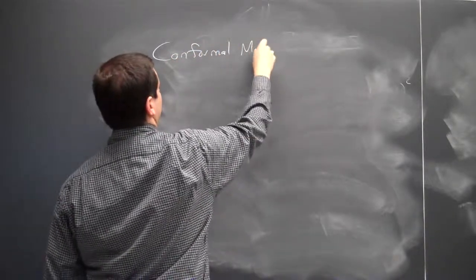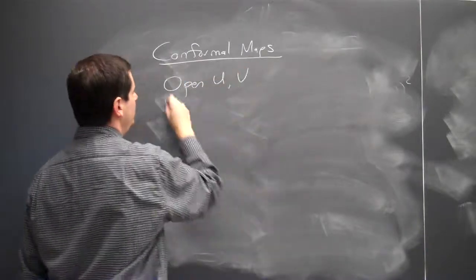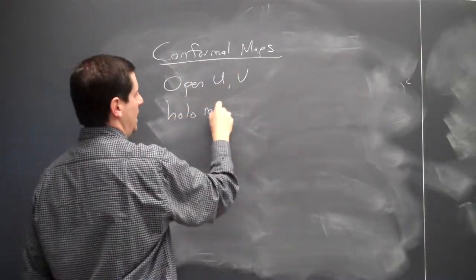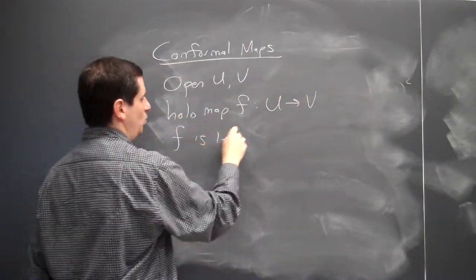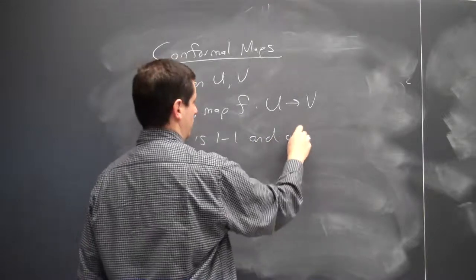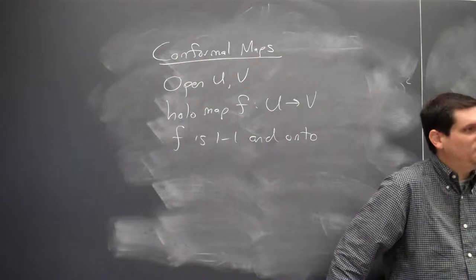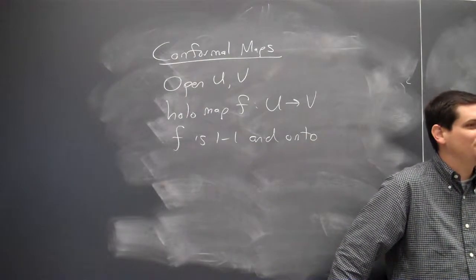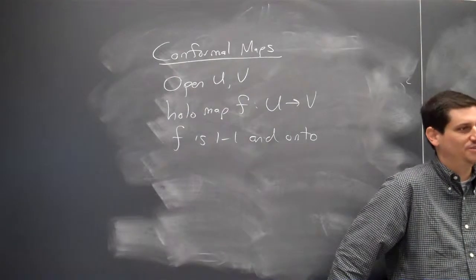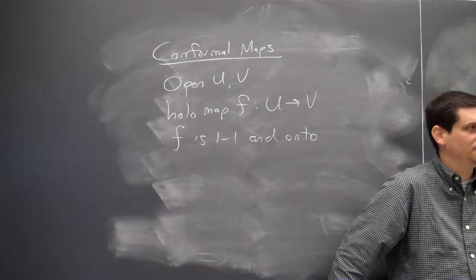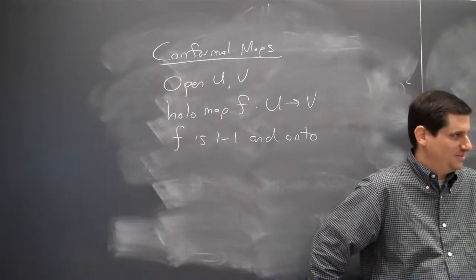So, conformal maps. Let's say we have open sets U and V, a holomorphic map F from U to V, where F is one-to-one and onto. Now, the following is not the fault of complex analysis — it's the fault of other analysts. We have lots of different words for these things. What's another word for one-to-one? Injective. What's another word for onto? Surjective.